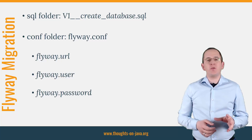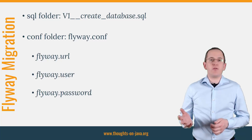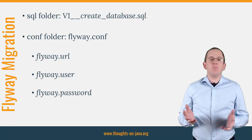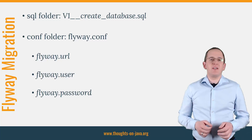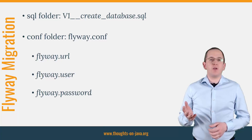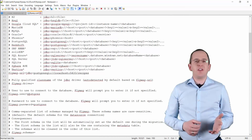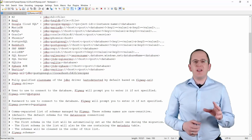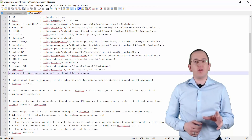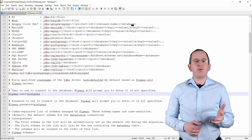The flyway.url parameter defines the JDBC URL which Flyway shall use to connect to the database. For most databases, Flyway will detect the required JDBC driver based on the flyway.url, so you don't need to provide it. The parameters flyway.user and flyway.password are optional — the command line client will prompt you for the user information if you don't provide them in the configuration file.